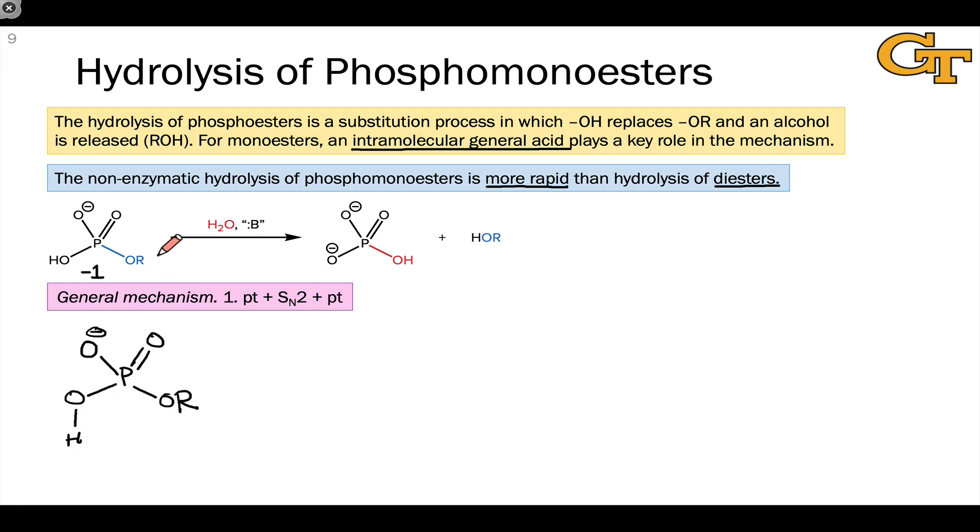Before we get into the mechanism, let's look at the overall transformation. Here we find phosphorus connected to an alkoxy group. This is a phosphomonoester, and what's apparent if we look at the fate of the alkoxy group on the product side is that the OR group in the starting material is acting as a leaving group.